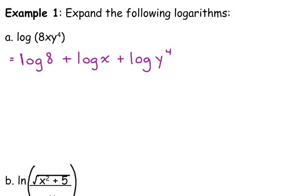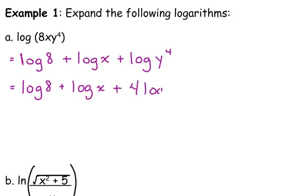Then I need to look at each individual logarithm and see if there's more simplifying to be done. I cannot do anything else to the log of 8 because it's base 10 — 10 to a whole number power is not going to give me 8, so I leave that as is. I can't do anything with the log of x. But for the log of y to the 4th, it has an exponent, so I use my power rule to move that exponent in front. So my final answer is: log of 8 plus log of x plus 4 times the log of y.